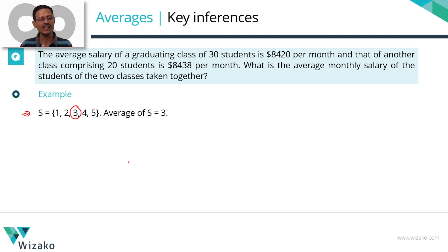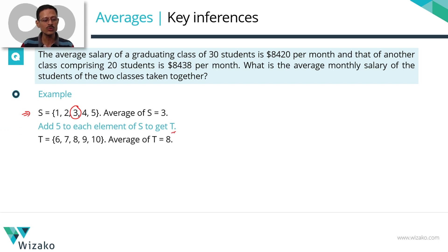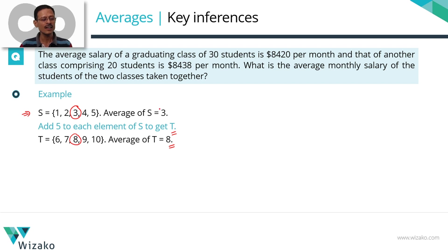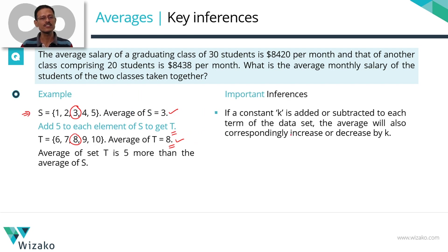Now I'll add 5 to each element of set S to get a new set T = {6, 7, 8, 9, 10}. These five numbers are also in an AP, so the middle number 8 is the average. Average of set S was 3; average of set T is 8. We got each term of T by adding 5 to each element of S. So if you add a constant K to each element of a set, the average also goes up by that same K. That is Inference 1.